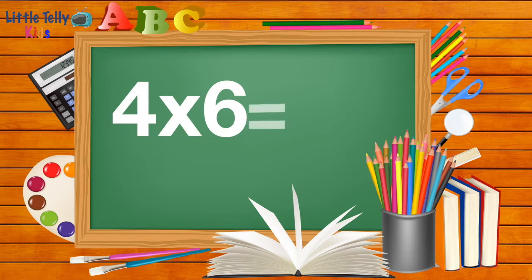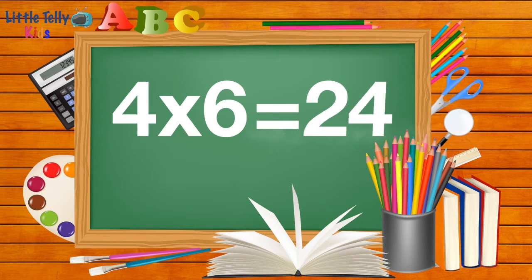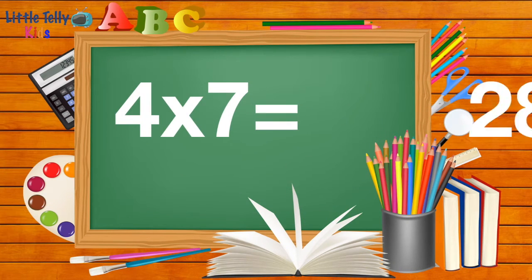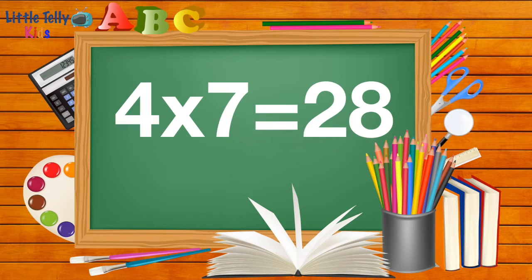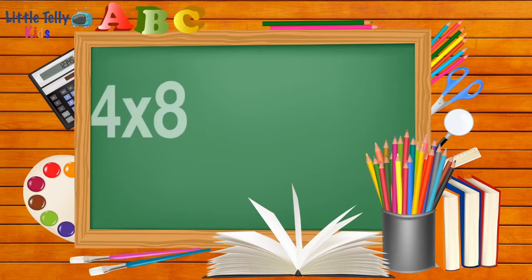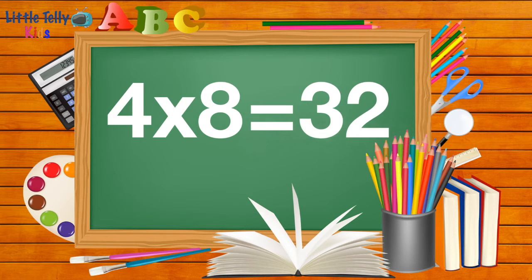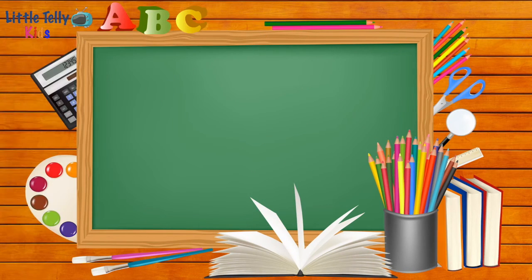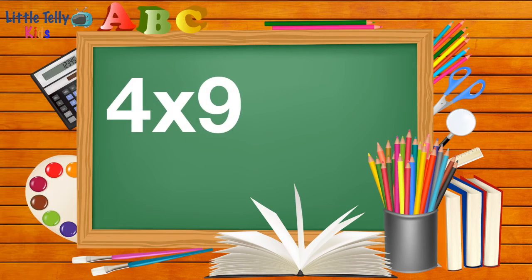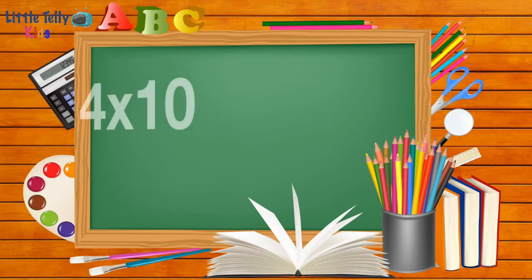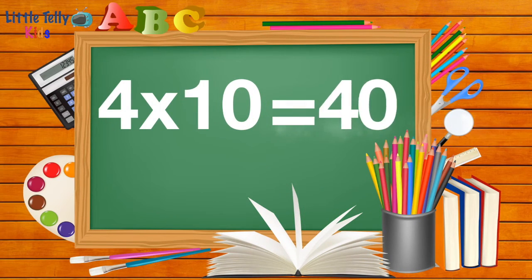Four six are twenty-four. Four sevens are twenty-eight. Four eights are thirty-two. Four nines are thirty-six. Four tens are forty.